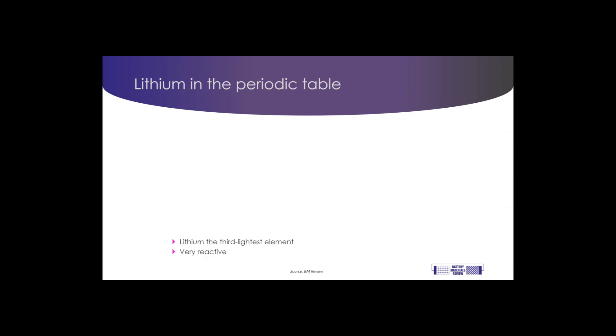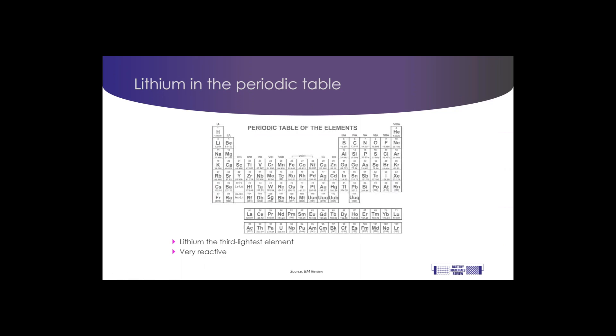So, to understand this chemistry, I need to talk about lithium metal and its properties first. If you think back to your school chemistry lessons, lithium is the third element in the periodic table with an atomic number of three.